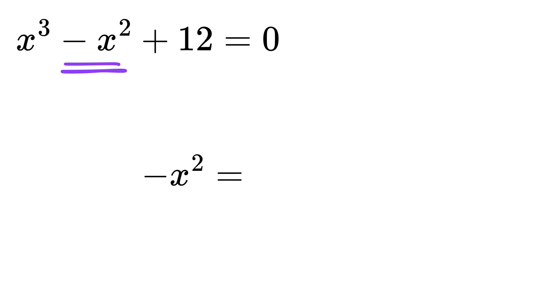To do that, we can write minus x squared as 2x squared minus 3x squared because 2 minus 3 is minus 1. So, rewrite this as x cubed plus 2 times x squared minus 3 times x squared plus 12 equals 0.